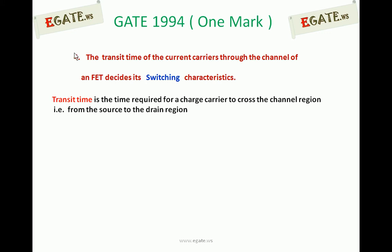Transit time is the time required for a charge carrier to cross the channel region — that is, from source to drain. So, how much time does it require for a charge carrier to move from the source region to the drain region is called transit time. The region between source and drain is normally called the channel region.